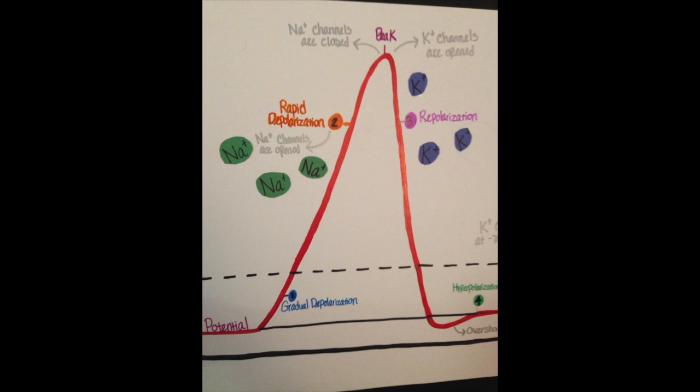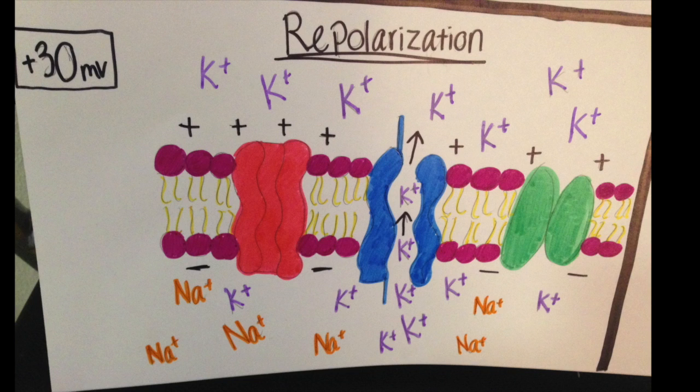In the stage of repolarization, the inactivation gate of the sodium channel closes, and the activation gate of the potassium channel opens. This creates an efflux of potassium ions in the extracellular fluid and flips the charge back to positive on the outside and negative on the inside.